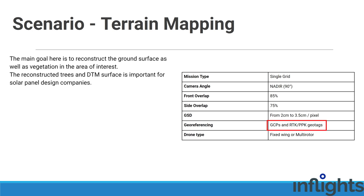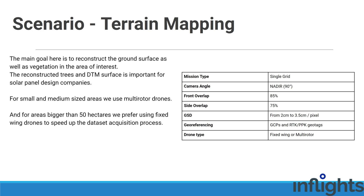We always use RTK or PPK equipped drones with additional GCPs to geo-reference the project. For small and medium-sized areas, we use multi-rotor drones. And for areas bigger than 50 hectares, we prefer using fixed-wing drones to speed up the dataset acquisition process.